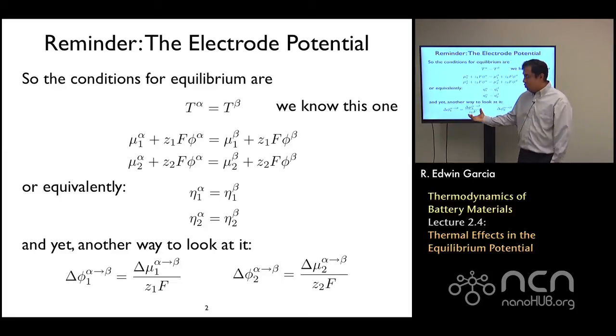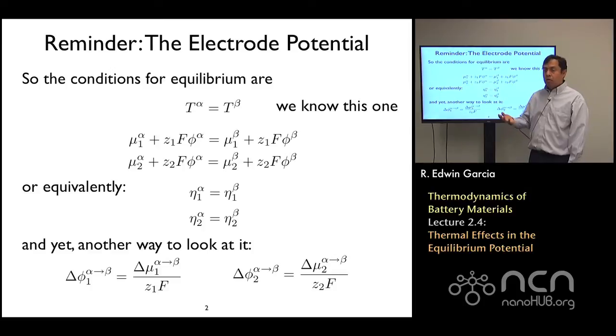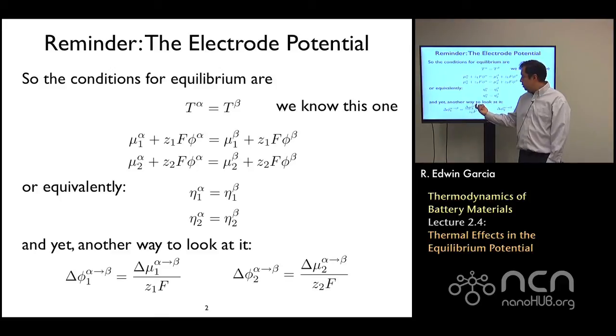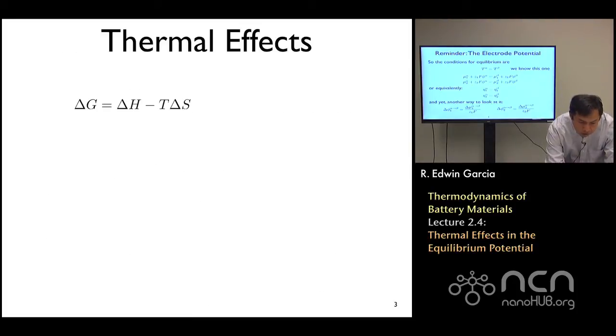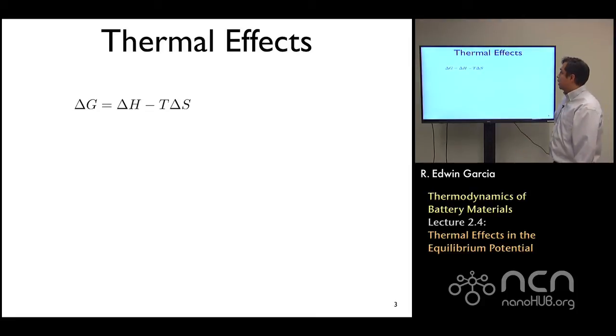Now, we discussed last class how the equilibrium between two phases impacts the shape of that potential as a function of composition for fixed temperature. Now what we're going to do today is talk about how temperature will affect that voltage. And so, in order to describe that, we need to go back to fundamentals.